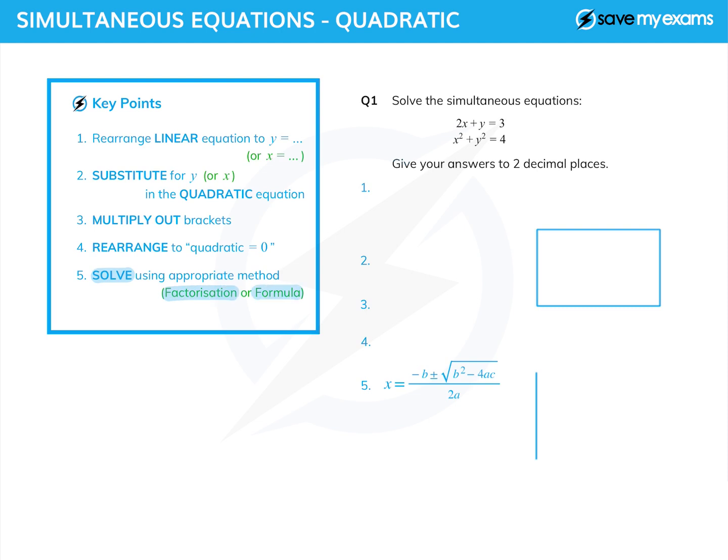A little bit of exam technique for you: if the question says give your answer to a particular degree of accuracy, you must do it using the formula because you won't be able to factorize. If it doesn't give that indication of accuracy, you can definitely factorize, although you can use the formula as well.